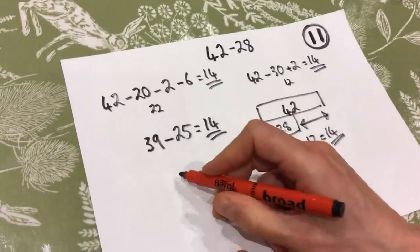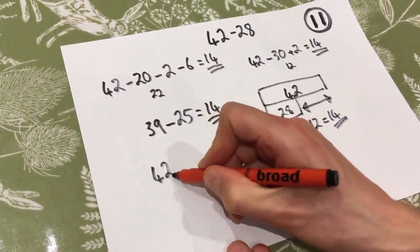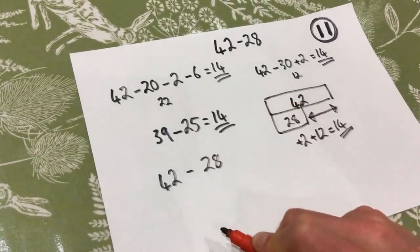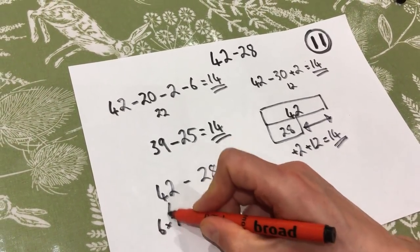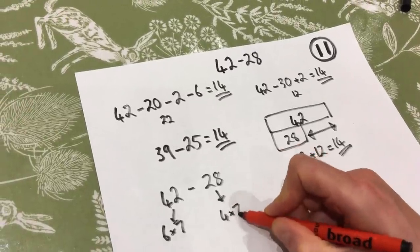Again, I have this wonderful strategy of multiplication. So you might have had to look for 42 and 28 and think, well, which times table could I use? Well, they're both in the seven. So here we've got six lots of seven, and here we have four lots of seven.